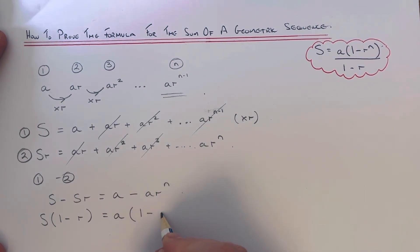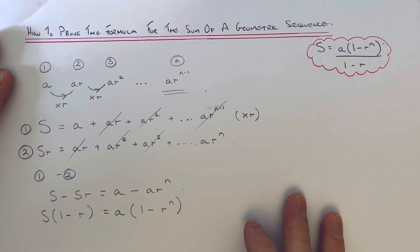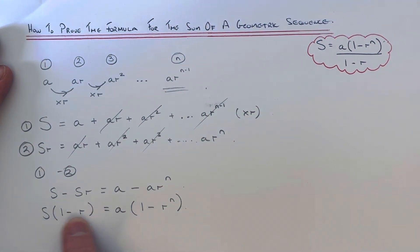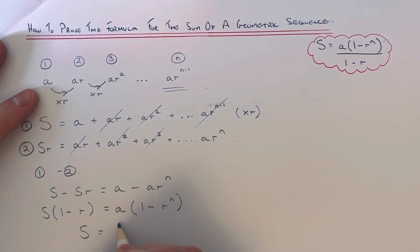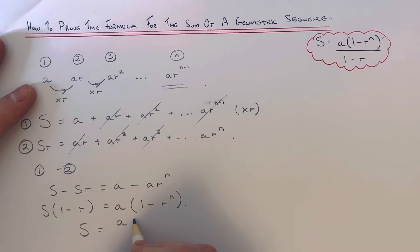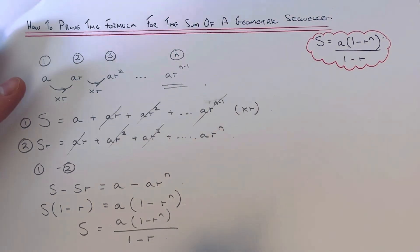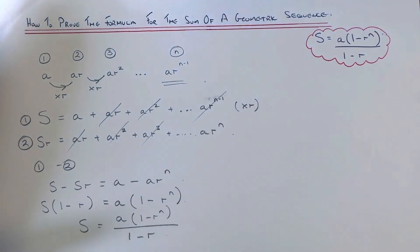And then your final step will be to divide by one minus r, so we get a bracket one minus r to the n over one minus r, which is our formula for the sum of a geometric sequence.